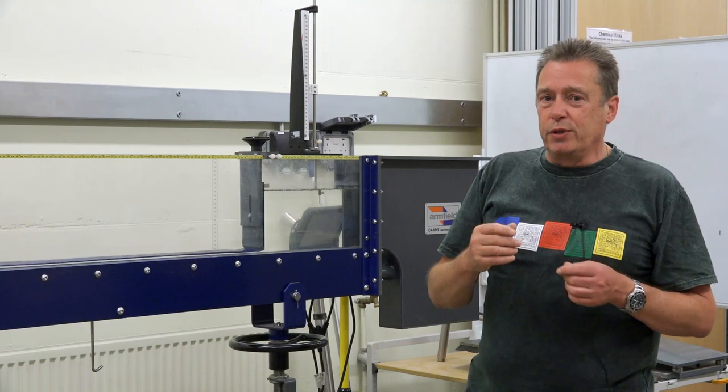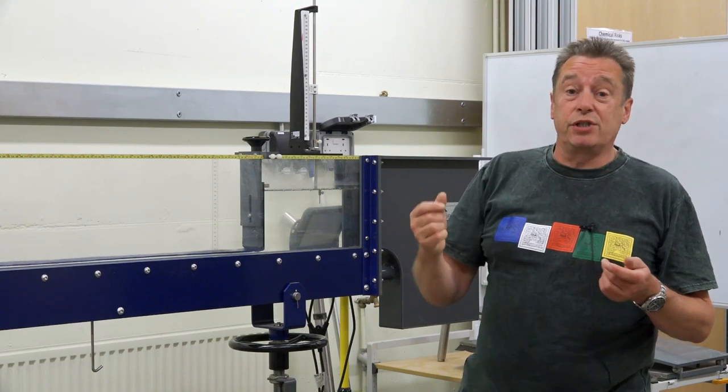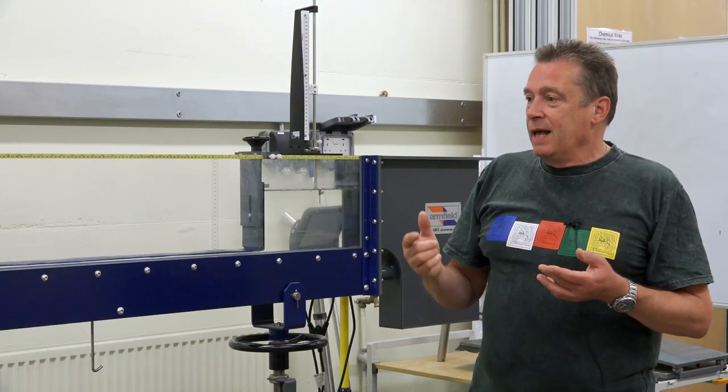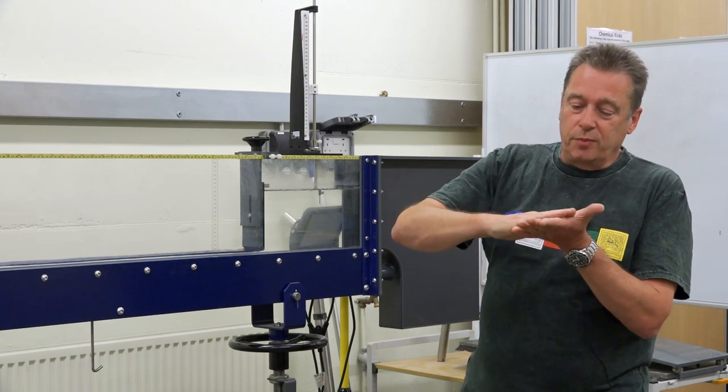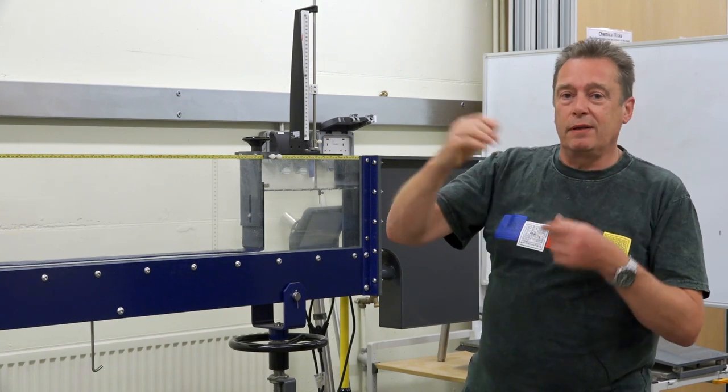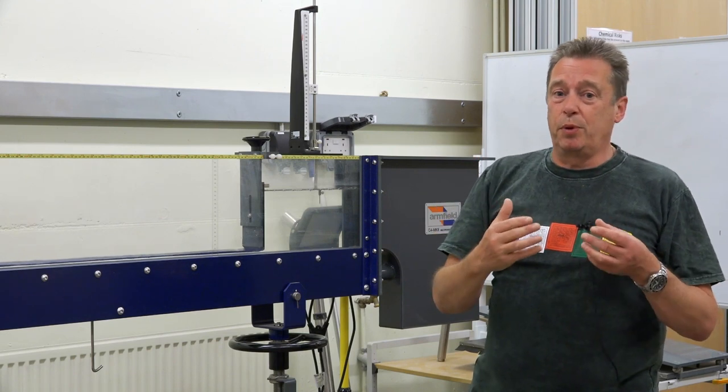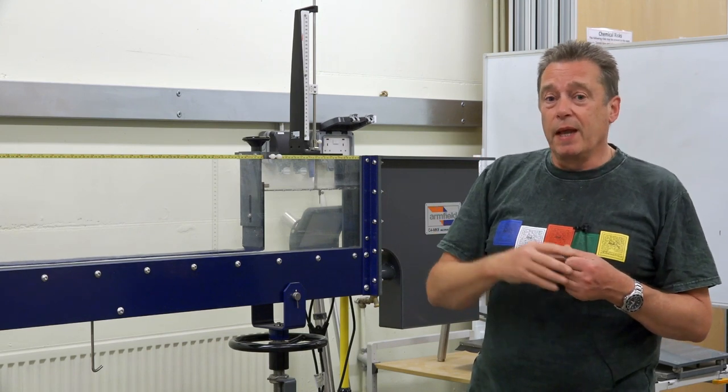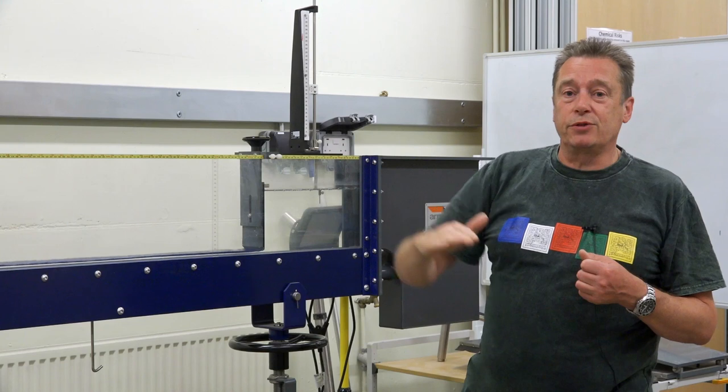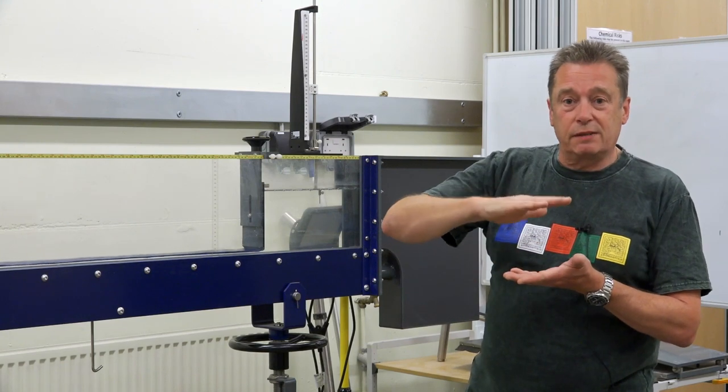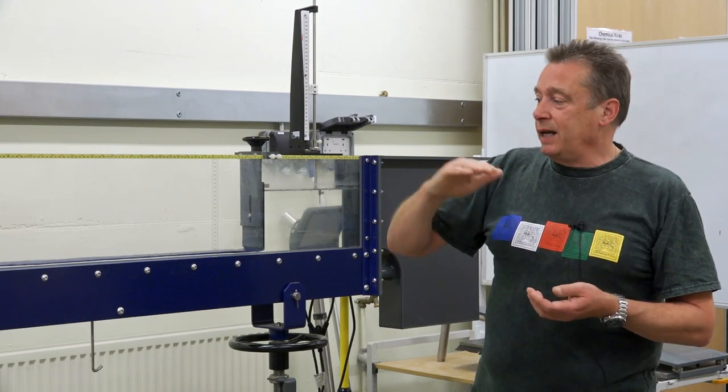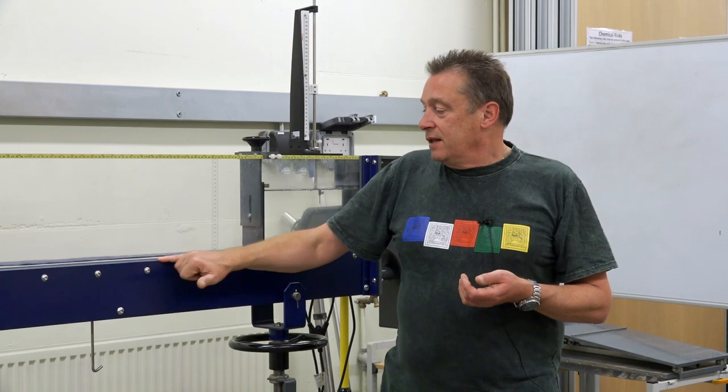From an engineering point of view, you could introduce a downstream weir. Some move up and down with adjustments, or you can use a simple block, which is what we're going to do. This will increase the depth of flow downstream and change this fast-flowing water into slow-moving water.